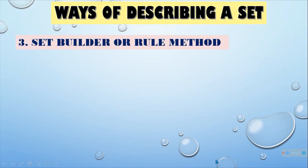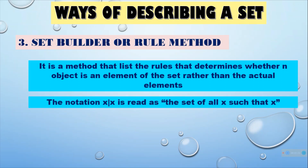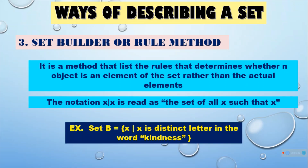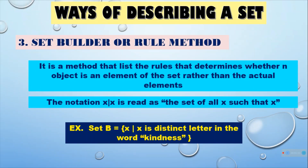The third one is the set builder or rule method. It is a method that states the rules that determine whether an object is an element of the set, rather than listing the actual elements. The notation is read as 'the set of all X such that X.' For example, Set B is equal to {X such that X is a distinct letter in the word 'kindness'}.